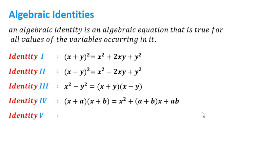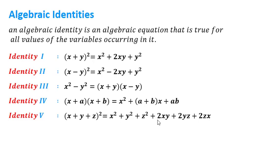The fifth identity is (x + y + z)² = x² + y² + z² + 2xy + 2yz + 2zx. The first three terms are the squares of x, y, and z. The other three terms are 2 times each pair taken two at a time: xy, yz, and zx.